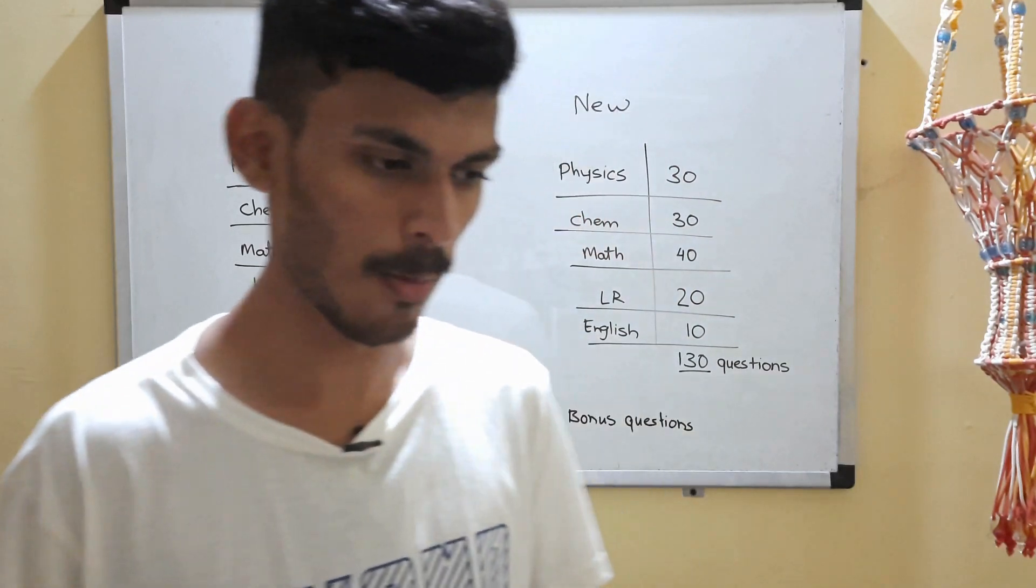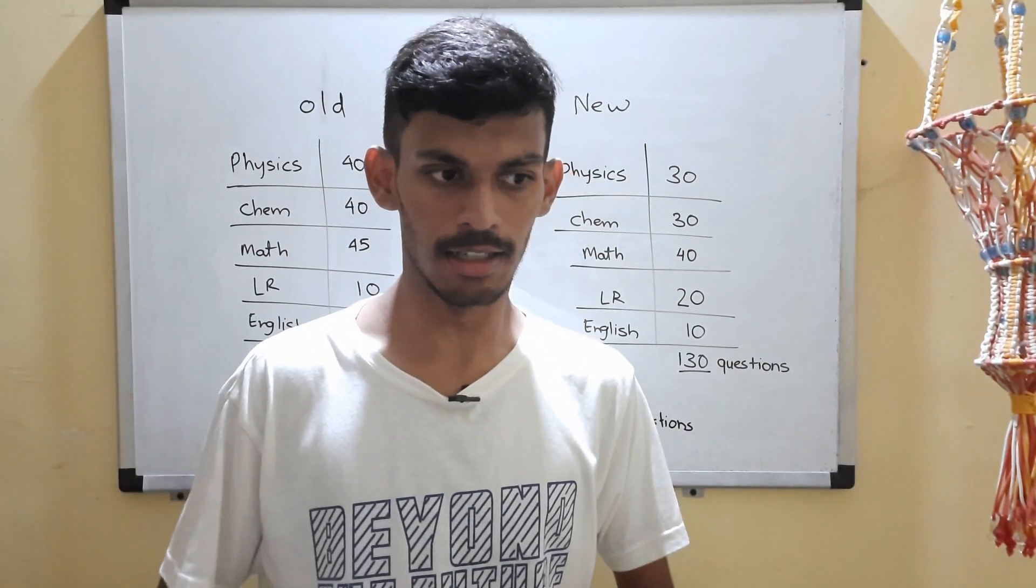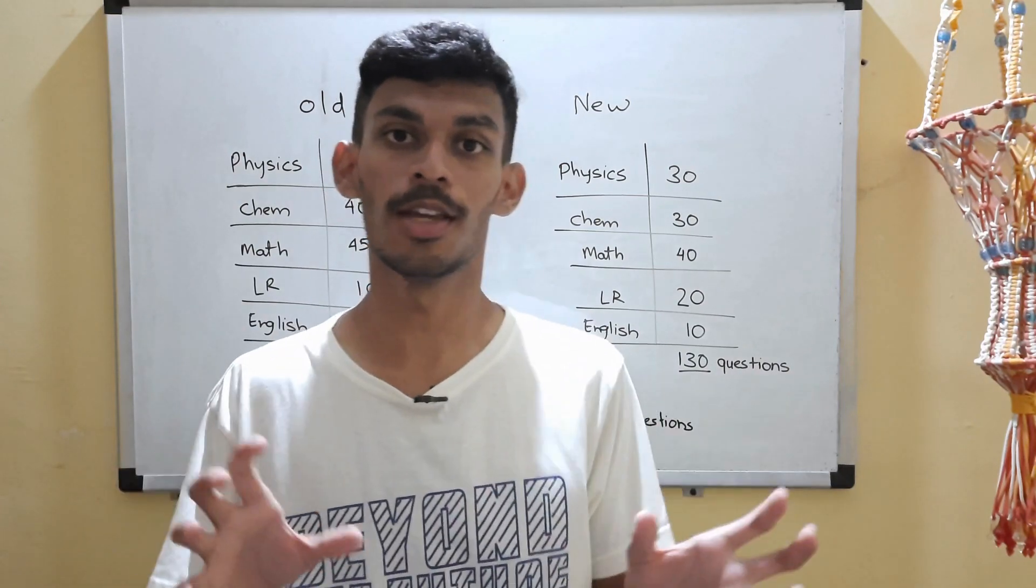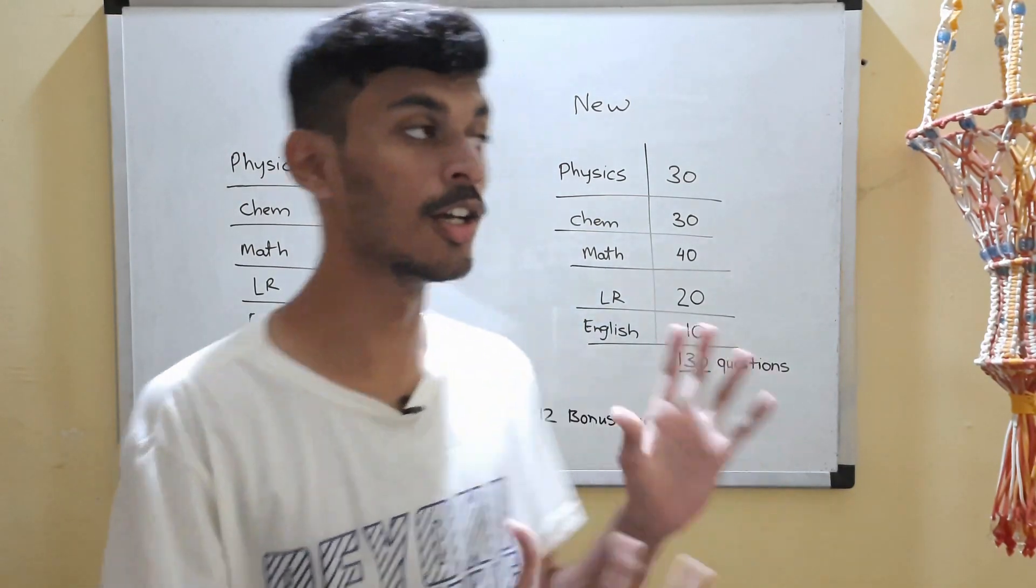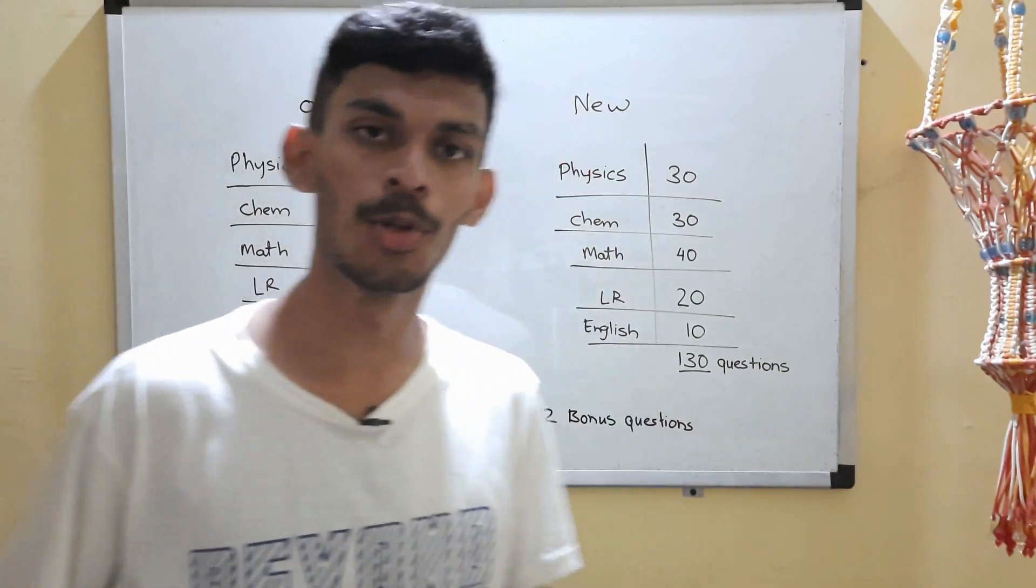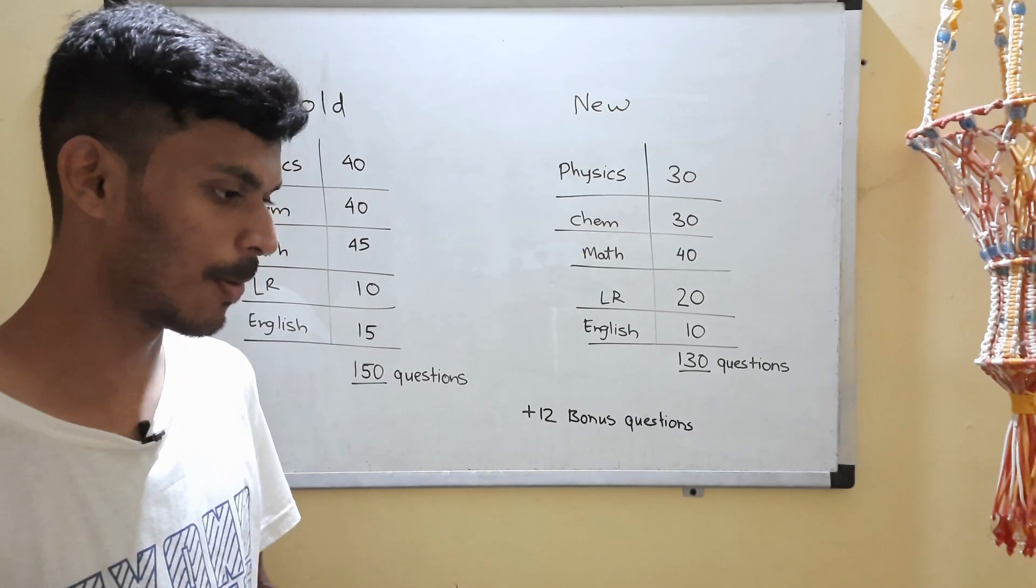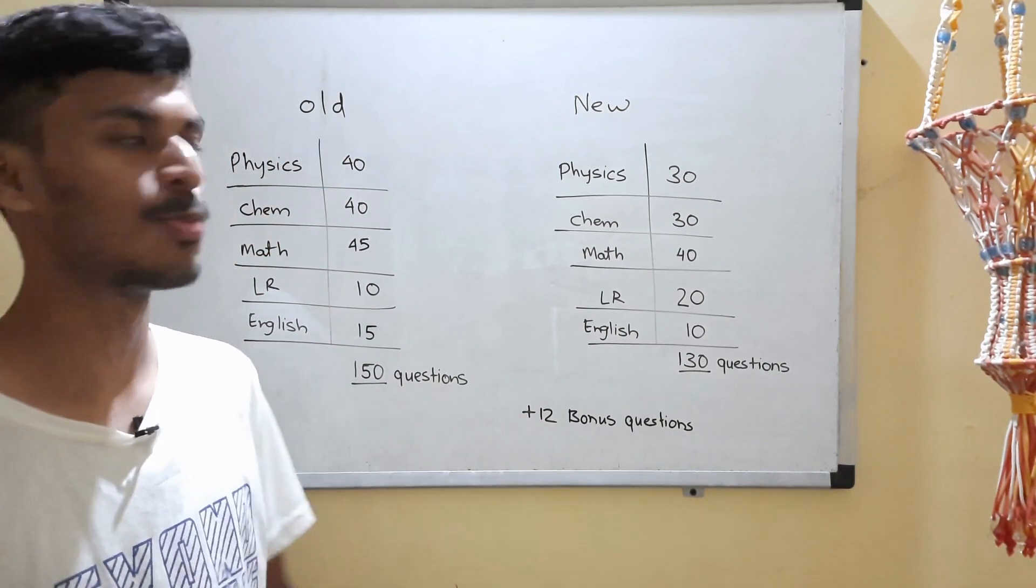You can clearly see the plus point over here is that the stress of your speed to accuracy is reduced. Earlier you were supposed to answer 150 questions in 3 hours, and now you are supposed to answer just 130 questions in 3 hours. So that is a clear plus point.